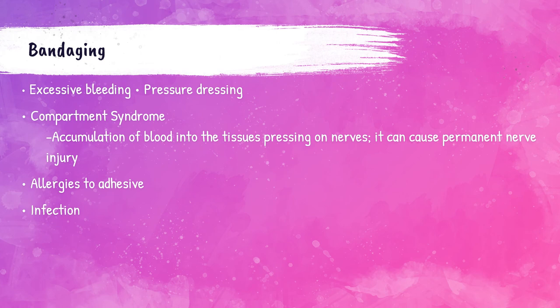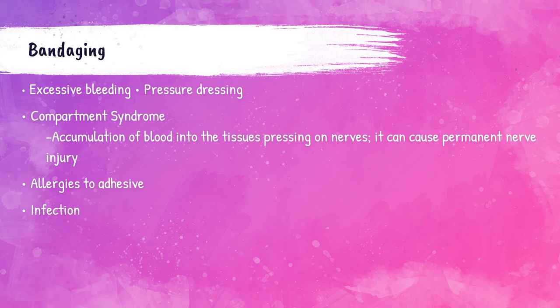Phlebotomists must always maintain pressure, or have a capable patient apply pressure, while they label the tubes. If the patient isn't capable, the phlebotomist should apply pressure to the venipuncture site and apply Coban, which is a type of wrap, being careful not to wrap it too tightly as it can cut off the patient's circulation. Some patients will have a reaction to bandage adhesive — in that case, the phlebotomist should use paper tape or Coban. Patients who are on blood thinners may bleed into the tissue after venipuncture, and this blood pooling can cause pressure to build in the area, called compartment syndrome, which is painful and can cause permanent injury requiring surgery. The phlebotomist must check for bleeding and hematomas before applying the bandage to help prevent this syndrome.